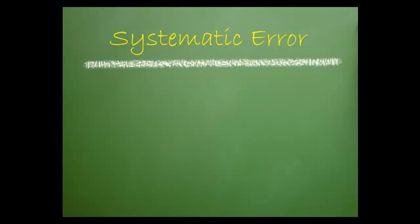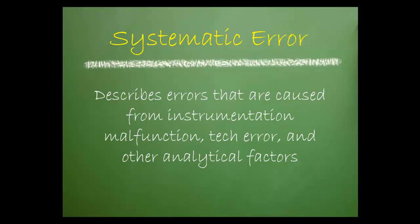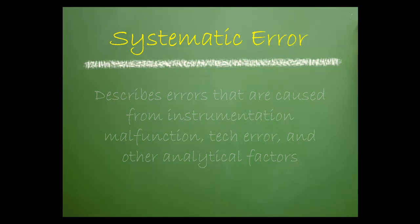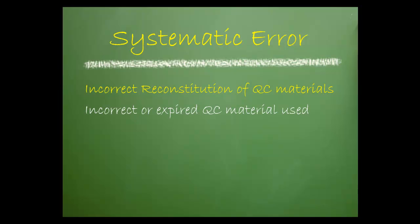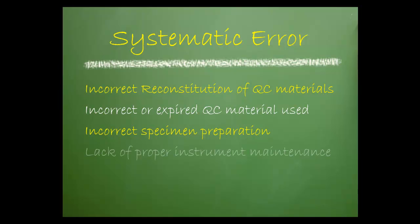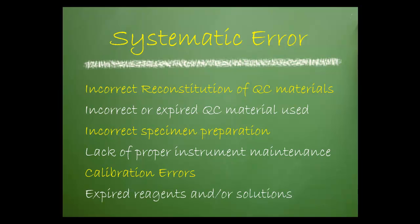Before we get into systematic allowable error, we need to understand systematic error. Systematic error in the laboratory setting is used to describe errors caused from instrument malfunction, tech error, and analytical factors. Examples include incorrect reconstitution of QC materials, incorrect or expired QC material, incorrect specimen preparation, lack of proper instrument maintenance, calibration errors, or expired reagents and/or solutions.